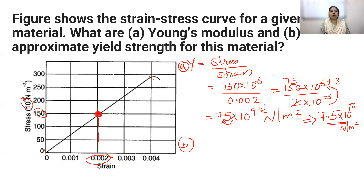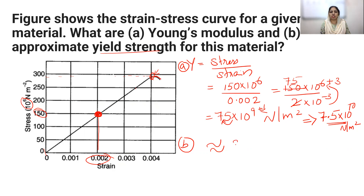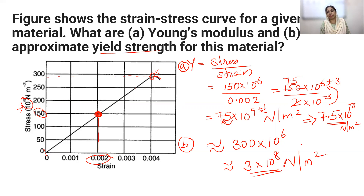For part B, we need to find the yield strength of this material — the maximum stress that can be felt by the wire. The yield strength is approximately equal to 3 × 10⁸ Newton per meter square. So Young's modulus is 7.5 × 10¹⁰ and yield strength is 3 × 10⁸ Newton per meter square.